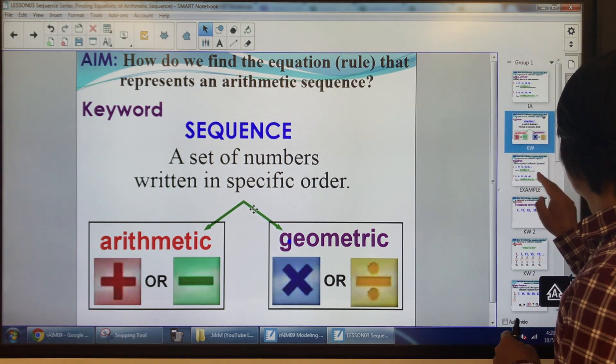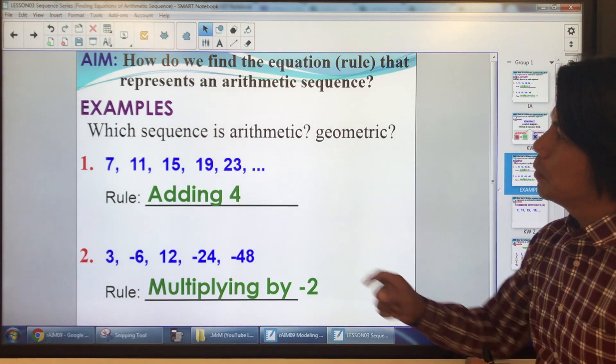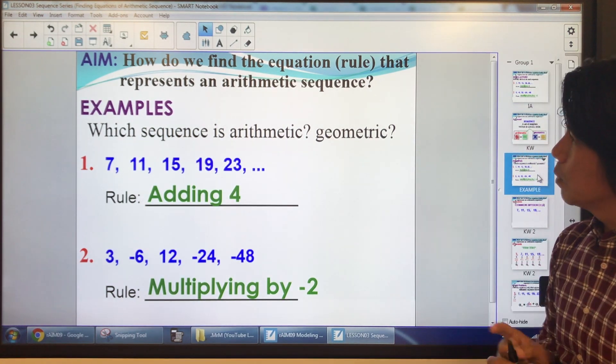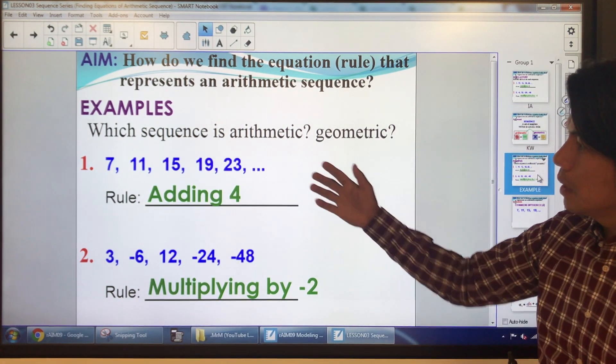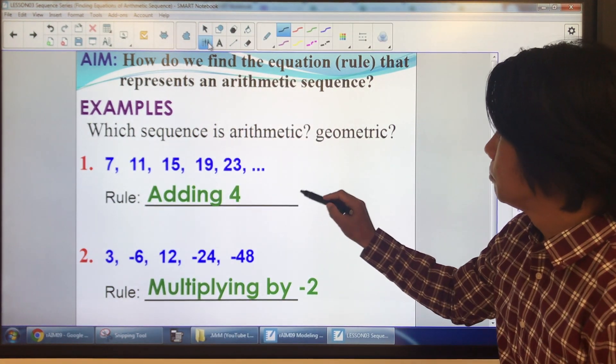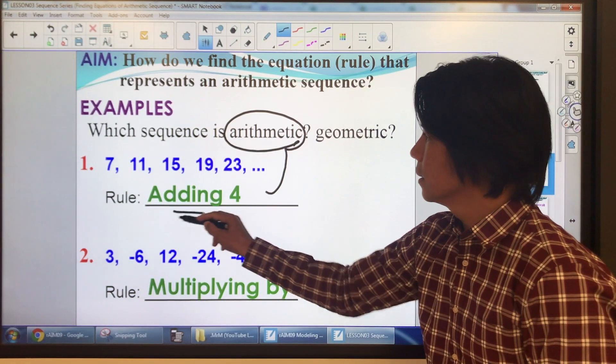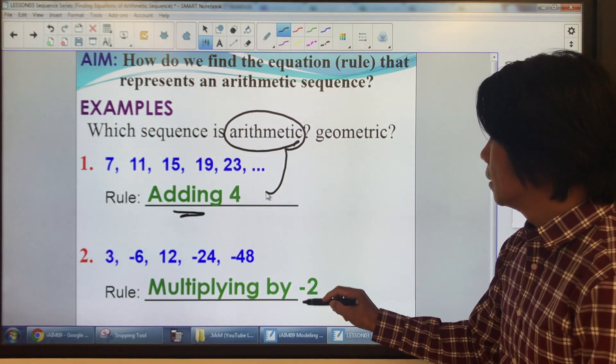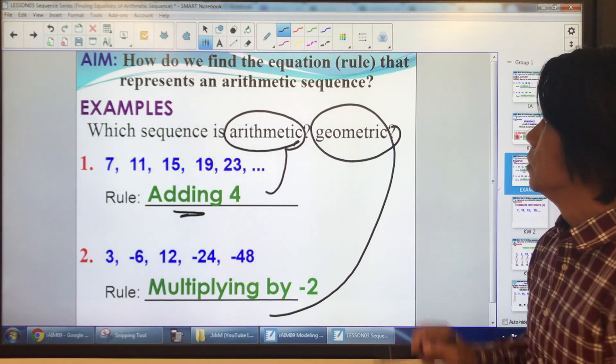And geometric is when you're multiplying or dividing. Let's do a brief practice. Which sequence is arithmetic and which one is geometric from the intro activity? Definitely, this is arithmetic because we're adding. Multiplying means it's geometric.